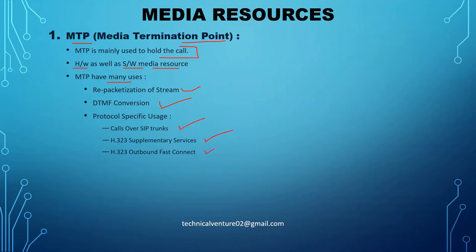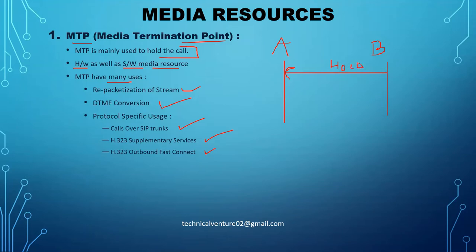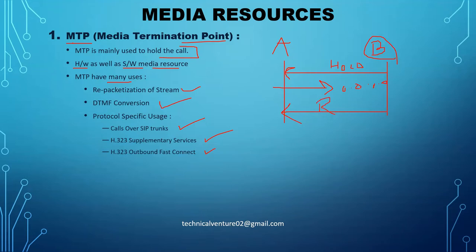If phone A and phone B are on a call and phone B presses the hold button, MTP will take that call. If there is any stream coming from phone A, it should send it to IP address 0.0.0.0 — it should not send it to phone B's IP address. That is why MTP holds that call. As soon as B presses resume, MTP will change this IP address back to phone B's IP address so that communication between A and B resumes.